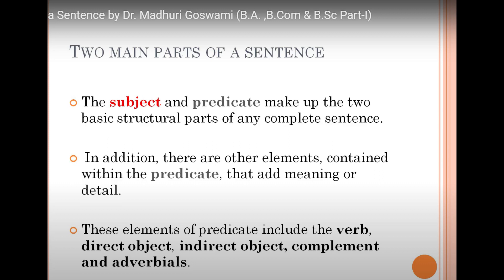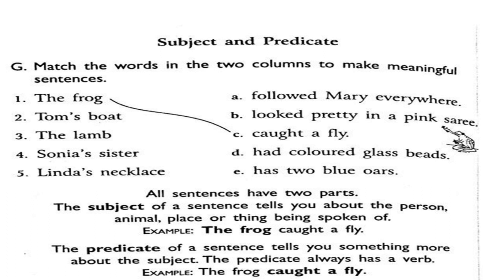Dear students, in the previous lesson we studied about subject and predicate also. In this video, we will do practice of that. But first we will have a recap: what is the subject and predicate? Let's revise it with some examples. Match the words in the two columns to make meaningful sentences. The first one: 'The frog' is matched with 'caught a fly.' The frog is the subject and 'caught a fly' is the predicate of that sentence.